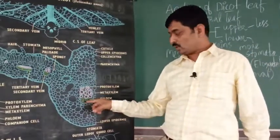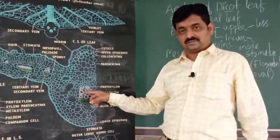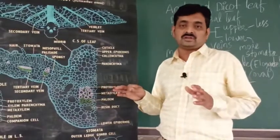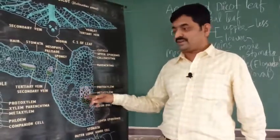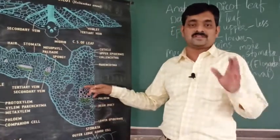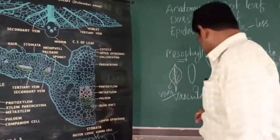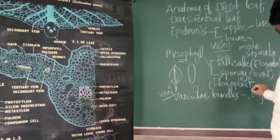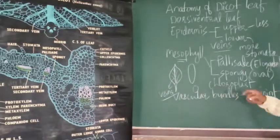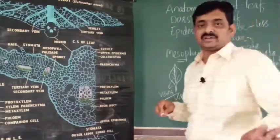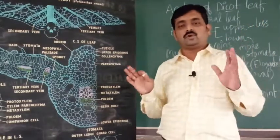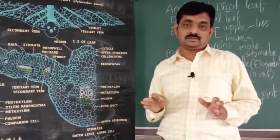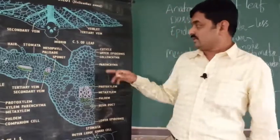In the vascular bundle, phloem is on the lower side and xylem is on the upper side. Phloem and xylem are present in the same bundle and lie in the same radius — that's why the vascular bundles in the leaf are called conjoint vascular bundles.